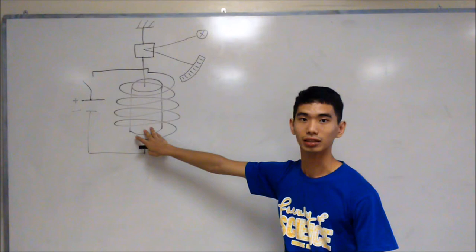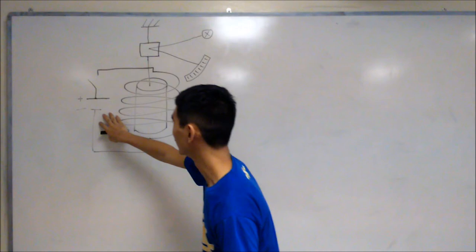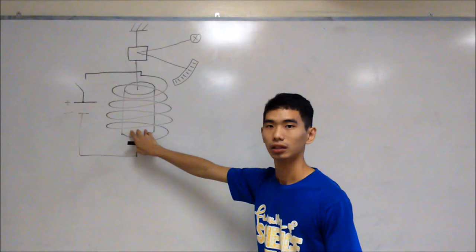So over here what we have is a magnet of a certain magnetization. This circuit will produce an external magnetic field that is of the opposite magnetization. So when we switch on the circuit, the external field produced will realign the electrons in the bar magnet in the opposite direction to its initial magnetization.